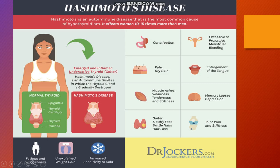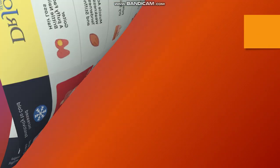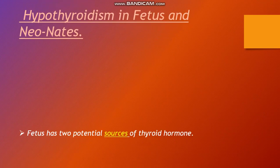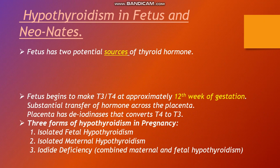Hashimoto's disease is an autoimmune disease in which the thyroid gland is gradually destroyed. When the gland is destroyed, hormones are not produced. This condition is known as Hashimoto's hypothyroidism. Now we consider hypothyroidism in the fetus and neonates.